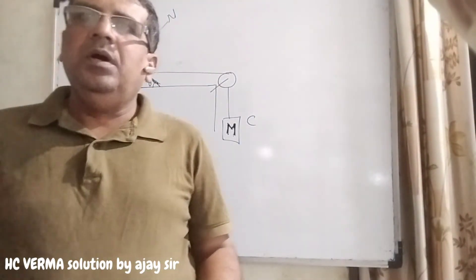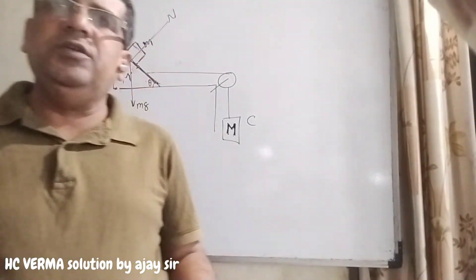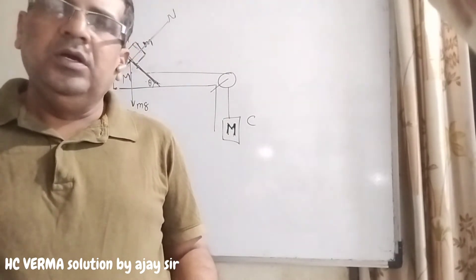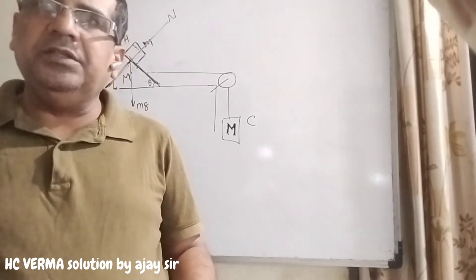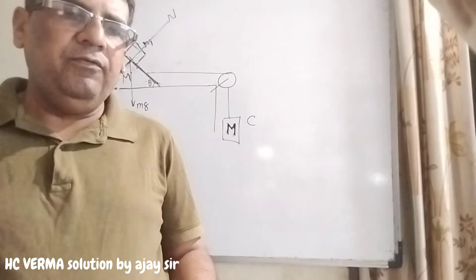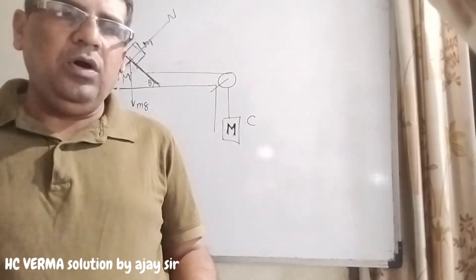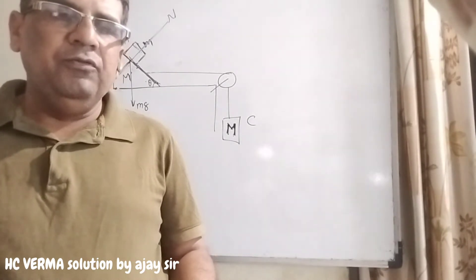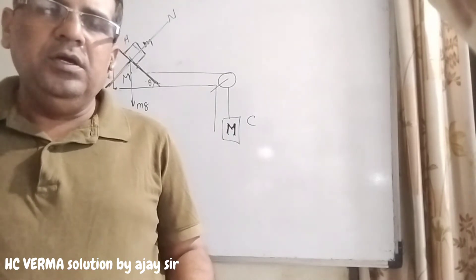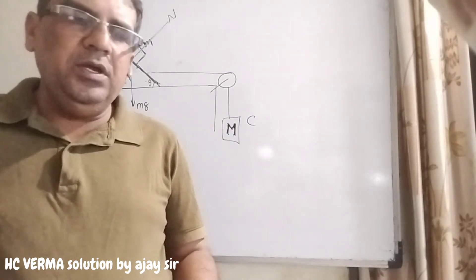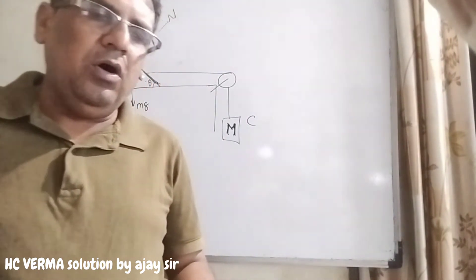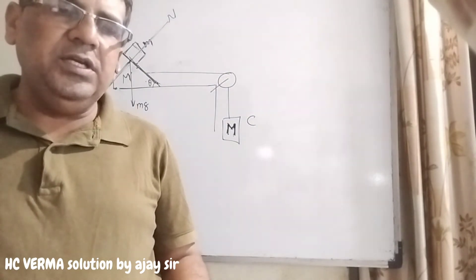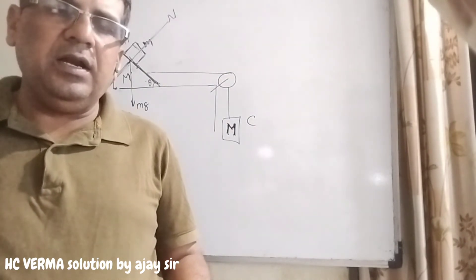Hello dear student. Aaj hum karenge H.C. Verma Newton's Laws of Motion question number 33. Question number 33 is: find the mass M of the hanging block in figure which will prevent the smaller block from slipping over the triangular block. All the surfaces are frictionless and the strings and the pulleys are light.